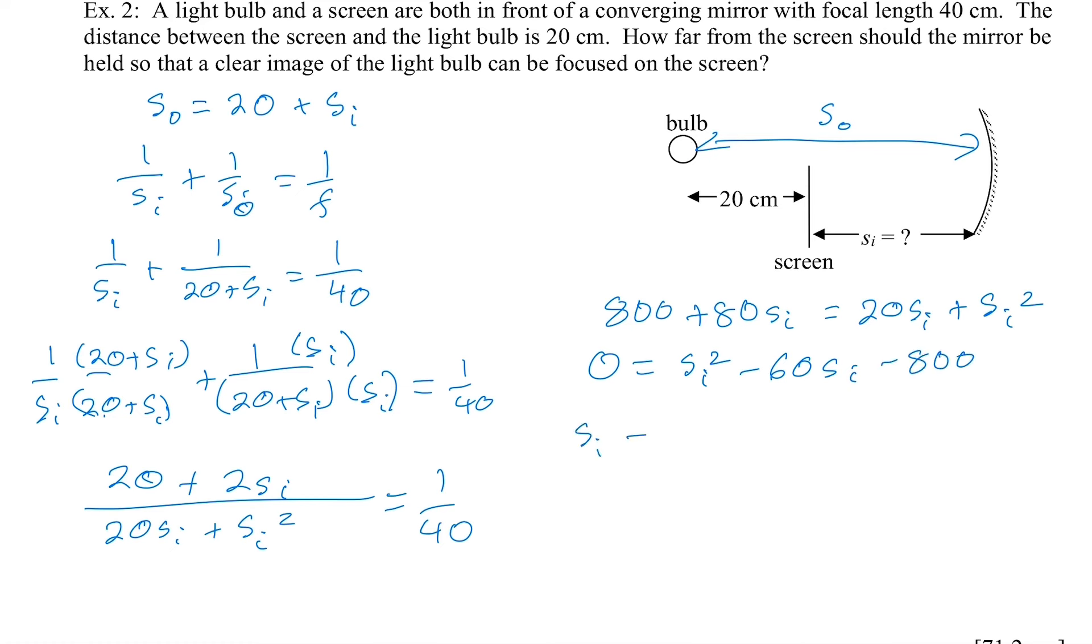The quadratic formula will tell me what SI is. And, the quadratic formula says, take negative B. That's 60. Plus or minus the square root of B squared. So, negative 60 squared. Minus 4 times A, which is 1. Times C, which is negative 800. Over twice A, which is 2 times 1. So, if I work this out, SI equals 60 plus or minus what's in that square root sign. That square root sign, we get 82.46. And, that's all going to be divided by 2.